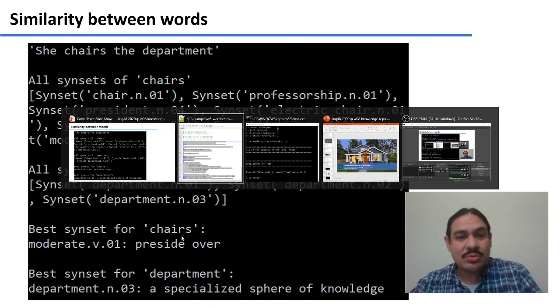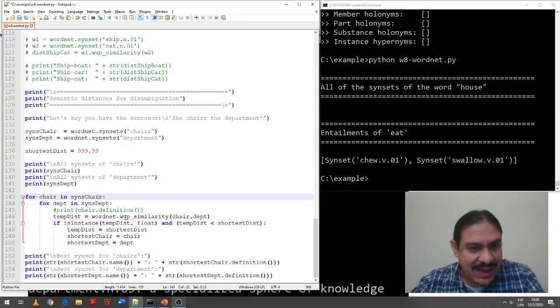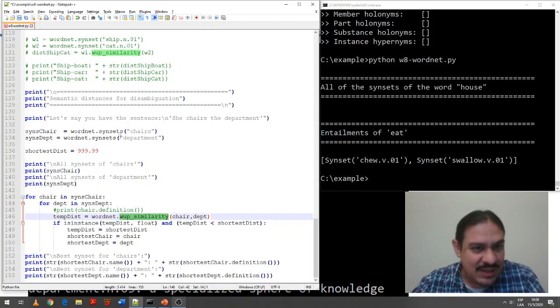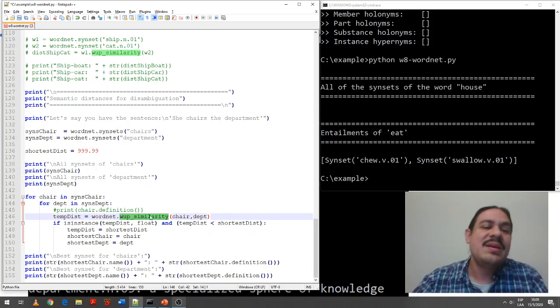What this code does is that it calculates the distance between every synset of chair and every synset of department. And by the way, this performs a type of stemming in the system, so it knows that chairs is related to chair. It measures a similarity between every synset for chairs and every synset for department, and then reports what are the two synsets that are closest together.